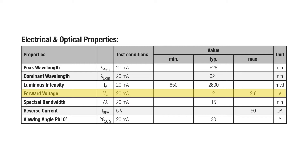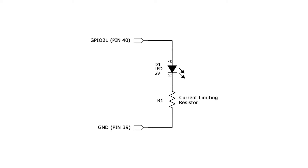This forward voltage drop gives you a typical value to determine the voltage the LED requires, which helps you calculate the current limiting resistor needed for the desired current. Looking at the schematic, we have two pins from the 40-pin header of the Raspberry Pi — GPIO21 on pin 40 and ground on pin 39. Then we have the current limiting resistor R1, whose value we need to determine, and diode D1, our LED, which has a 2-volt drop from the datasheet.